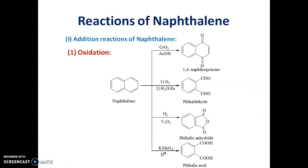Now, let us discuss the different reactions of naphthalene. Naphthalene undergoes two types of reactions that is substitution reaction and addition reaction. We will discuss addition reaction first. Under addition reaction, the first reaction is oxidation.